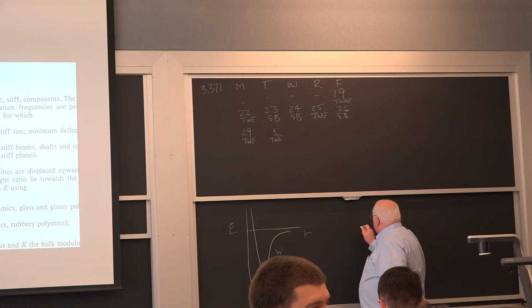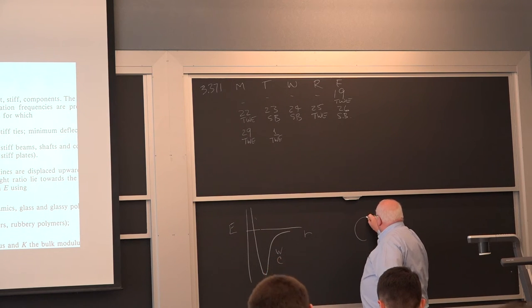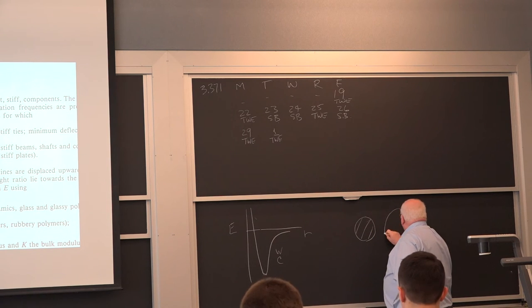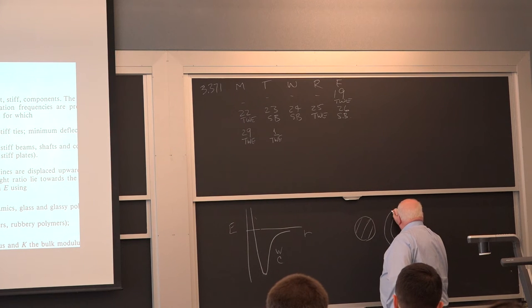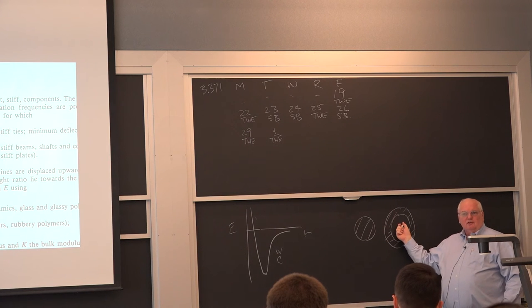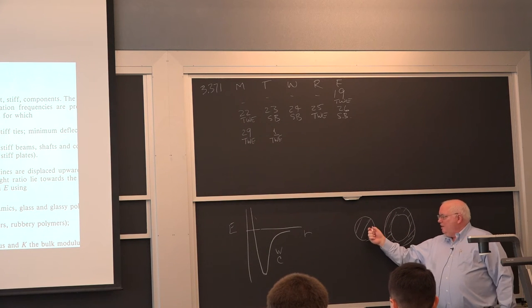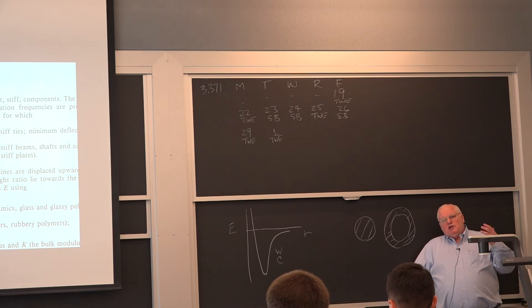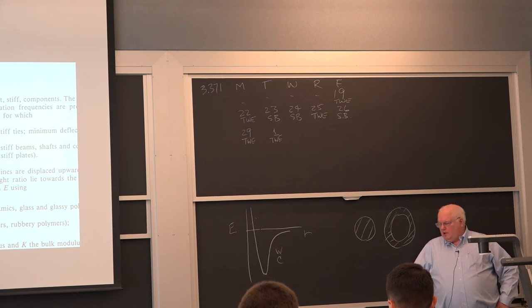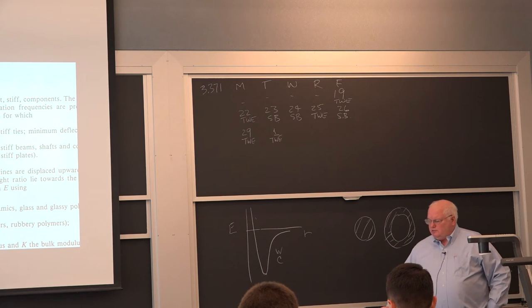It turns out, for equal areas, what would be stiffer? A solid rod or a tube of equal area? This one's stiffer. A tubular section is stiffer than equal weight, equal material of a solid rod. So you can get stiffness from two things. And so what this plot shows you, Ashby plot will give you, is E over rho for tensile stiffness.